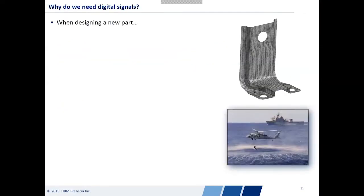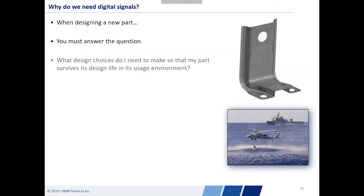So why do we need digital signals? If you're designing a new part — let's take, for instance, this bracket on the right — you have to answer a series of questions: what material are you going to use, how big does it need to be, what does it need to look like? If there are edges, can they be chamfers, fillets, or sharp edges? Is this a weight-sensitive area? Ultimately, what design choices do I need to make so that this part survives the design life in my usage environment?